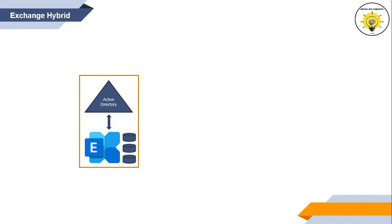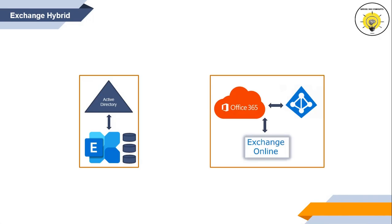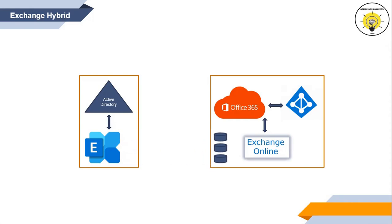Let's assume this organization wants to use Office 365 services, or they don't want to maintain their on-premise servers and want to move to Office 365 completely and decommission on-premise. There are multiple types of Exchange mailbox migration methods available, for example staged migration, cutover migration, and hybrid migration.